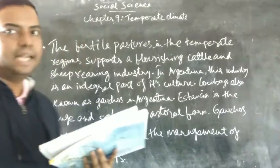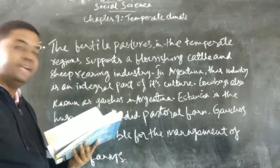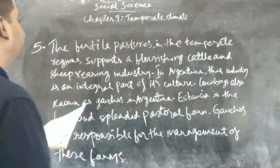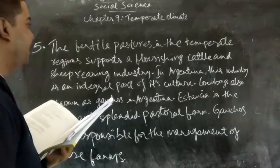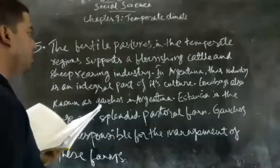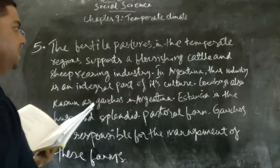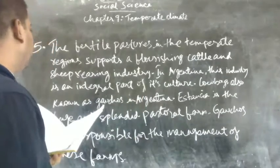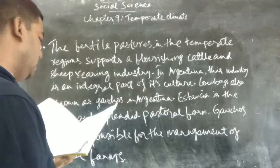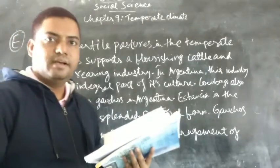Now we will see the last question of this chapter. Question number 5: How popular is pastoral farming in the temperate regions? The fertile pastures in the temperate regions support a flourishing cattle and sheep rearing industry. In Argentina, this industry is an integral part of its culture. The fertile pastures are also known as gauchos in Argentina. Estancia is the huge and splendid pastoral farm. Gauchos are responsible for the management of these farms.